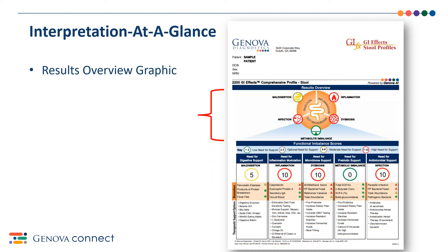The top portion, or the results overview graphic, uses a basic color-coding system where red represents a need for a high level of support, yellow represents moderate need for support, and green represents low need for support in that particular category. For this sample report, this patient needs a higher level of support for inflammation, or the I in DIG, and gut microbiome, or the G in DIG, because these categories are red. A moderate level of support is needed for digestion, or the D in DIG, because this category is yellow.